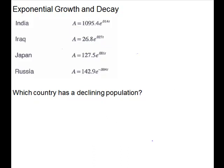Which country has a declining population? And that would be the one with the negative k. So this one has the negative k, and so Russia has the declining population.